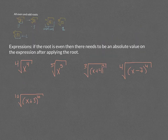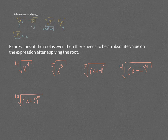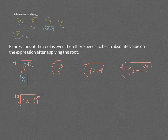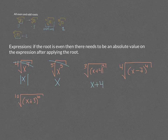If your root involves a variable and the root is even, make sure you include an absolute value. The fourth root of x to the fourth gives the absolute value of x. If the root is odd, the fifth root of x to the fifth just gives x. The cube root of x plus 4 to the third is x plus 4 since it's odd. The fourth root of x minus 7 to the fourth gives the absolute value of x minus 7. The tenth root of x plus 3 to the tenth gives the absolute value of x plus 3.